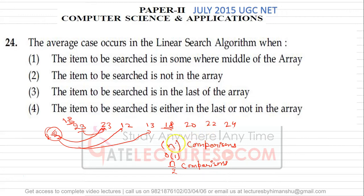If the element is not found in the array or is found at the last position of the array, this is the worst case. In the worst case, this algorithm will take order of n time — this is the upper bound of the algorithm. If the element is not in the array, you do an unsuccessful search with order of n. If the element is the last element, you do a successful search with order of n, making n comparisons to determine whether the element is inside the array or not.